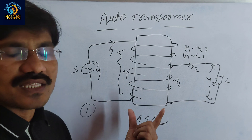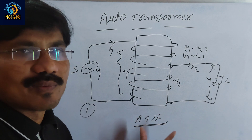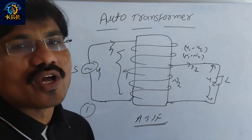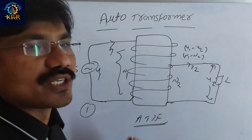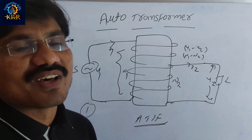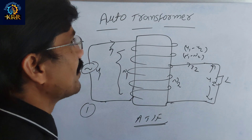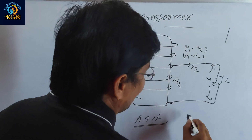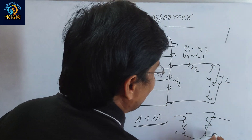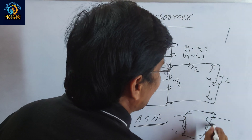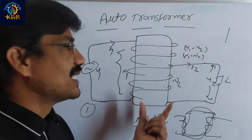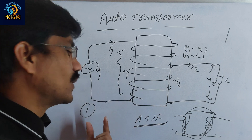The first drawback is that the auto transformer is not suitable for perfect isolation of two circuits. In a two-winding transformer, the two windings provide perfect isolation, but in an auto transformer there is no perfect isolation between the two circuits.